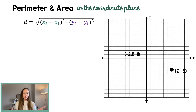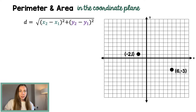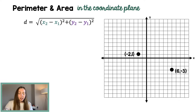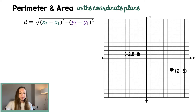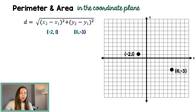So let's say that you had two points in the coordinate plane and you needed to find the distance. Let's just practice finding the distance between those two points. Our distance formula is the square root of (x₂ − x₁)² + (y₂ − y₁)².